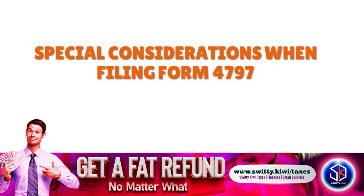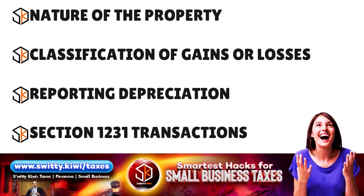There are several special considerations when filing Form 4797. You need to think about the nature of the property, the classification of gains or losses, and reporting depreciation. Form 4797 is specifically used to report the sale, exchange, or involuntary conversion of property used in a trade or business, as well as depreciable or amortizable property. It does not apply to the sale of personal property.